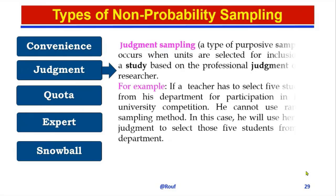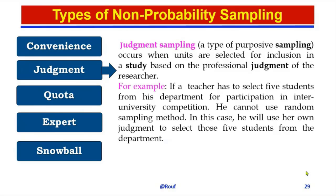The second type is judgment sampling. Judgment sampling, a type of purposive sampling, occurs when units are selected for inclusion in a study based on the professional judgment of the researcher.